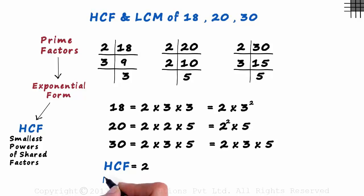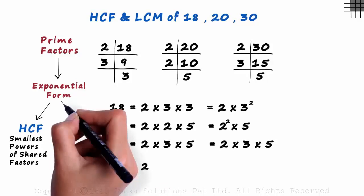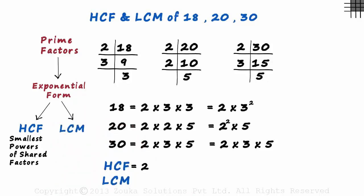How do we find the LCM now? To find the LCM, we multiply the highest powers of each factor. For the LCM, the factors do not have to be shared.